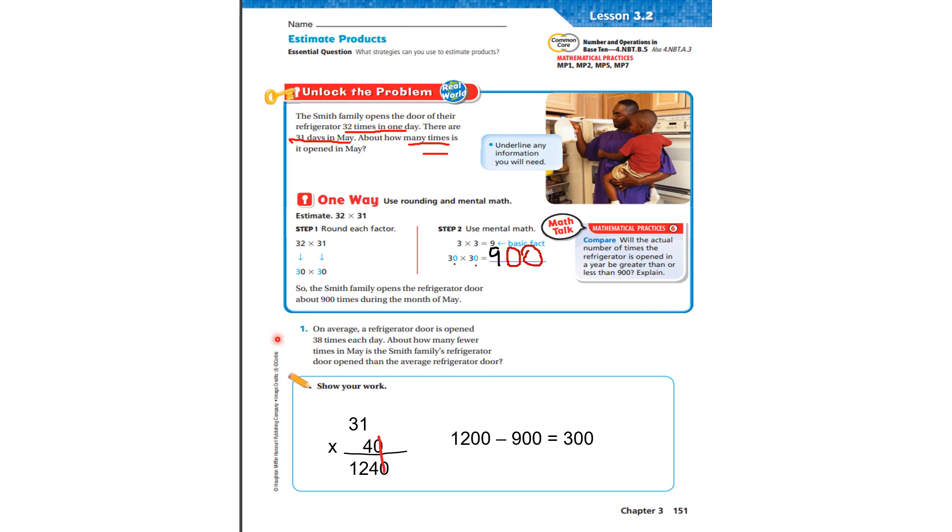Let's look at this question. On average, a refrigerator door is open 38 times a day. About how many fewer times in May is the Smith family refrigerator door open than the average refrigerator door? Well, 38 is close to 40. So I'm going to round 38 to 40. And I'm going to multiply the 31, the number of days in May, by 40. And I get 1,240. Well, 1,240 is close to 1,200. So 1,200 minus 900, the number here, equals 300. So it is open 300 fewer times.